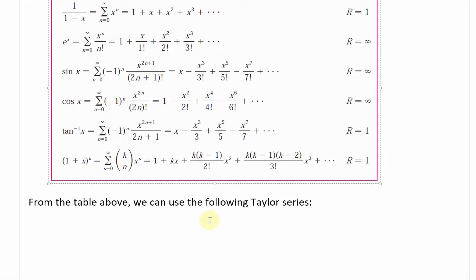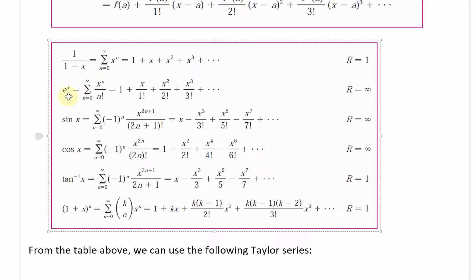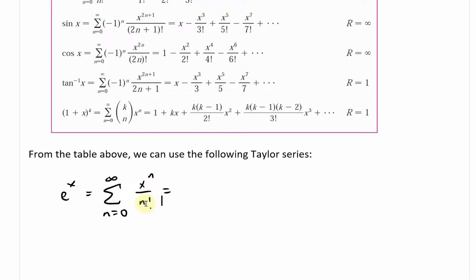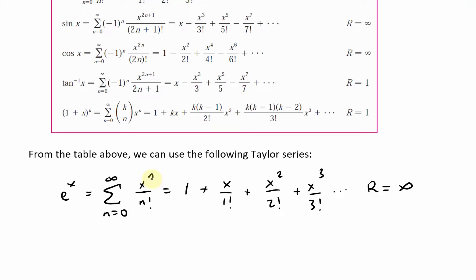From the table, we use the Taylor series for e^x: it's the summation from n equals 0 of x^n divided by n factorial. Expanding: x to the 0 over 0 factorial is 1, then x over 1 factorial, then x squared over 2 factorial, then x cubed over 3 factorial, and so on. The radius of convergence is r equals infinity, so it converges for all values of x.